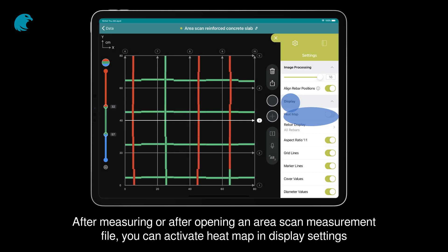After measuring or after opening an area scan measurement file, you can activate heat map in display settings.